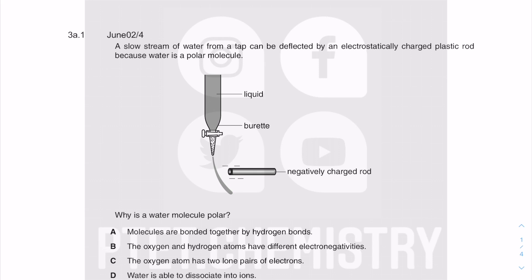Let me get started on the question that caused me problems. We have a slow stream of water from a tap, and you can see that the stream of water gets deflected — it doesn't flow straight. It gets attracted towards the negatively charged rod, and this is a result of the polar water molecule. We say the water molecule is polar, and molecular polarity is a result of the shape of the molecule.